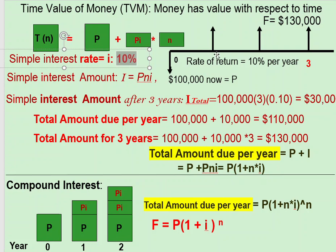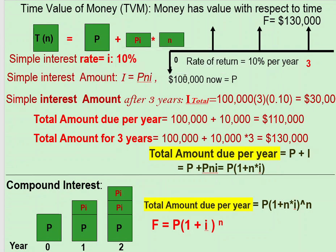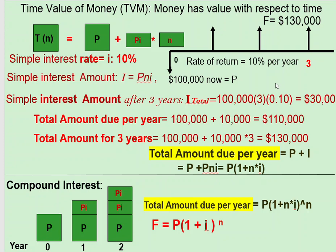For example, if you deposited a hundred thousand dollars at 10% simple interest, every year you earn ten thousand dollars. So ten thousand plus ten thousand plus ten thousand is thirty thousand. That thirty thousand is the interest amount, and you calculate it using the formula: interest = P × n × i.